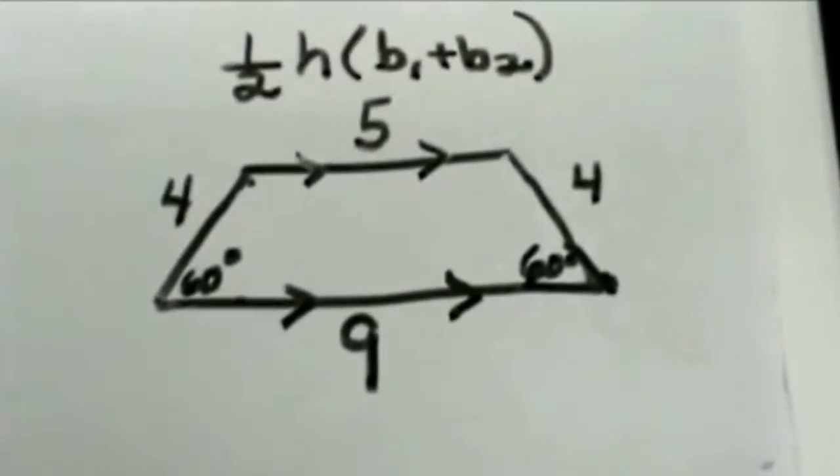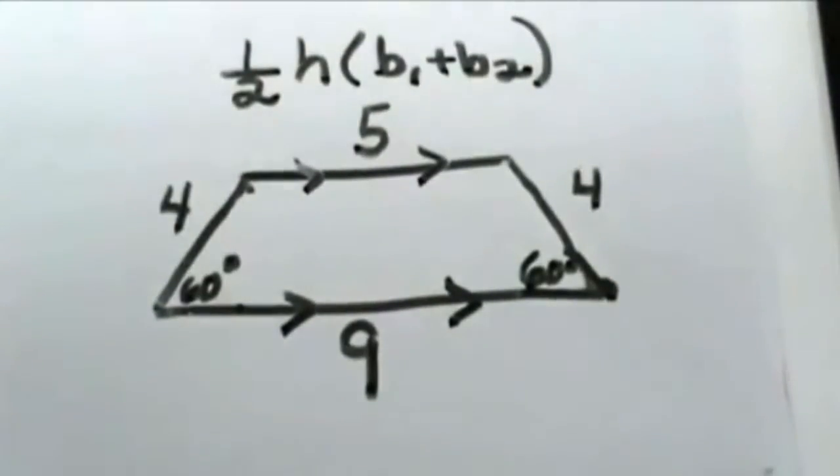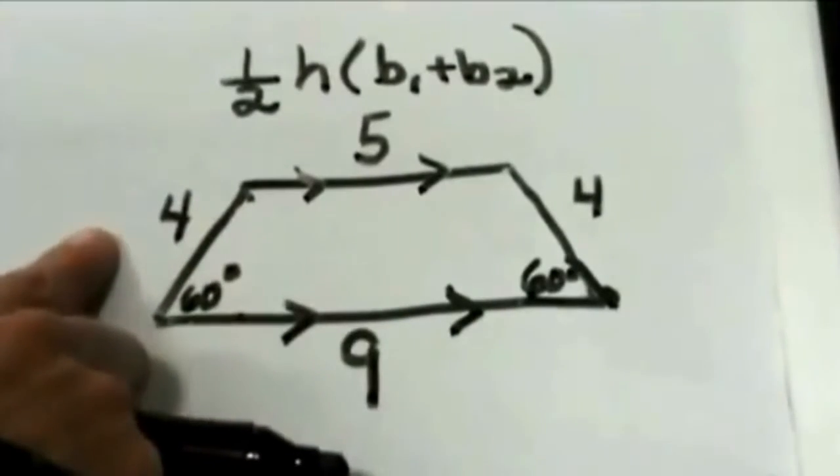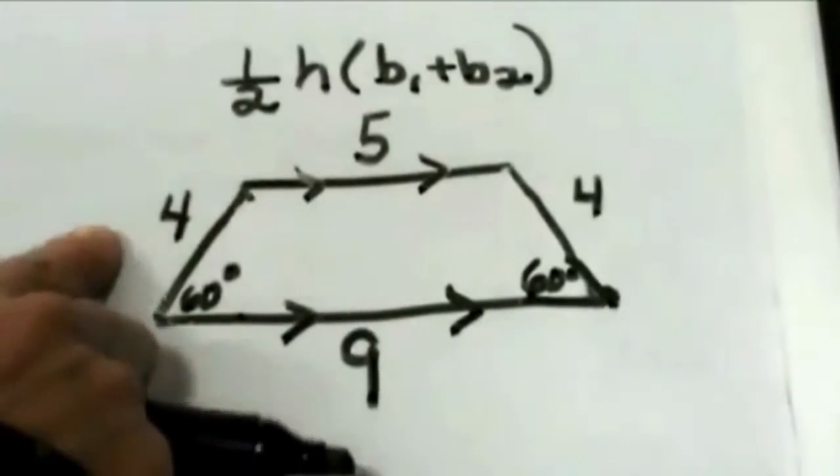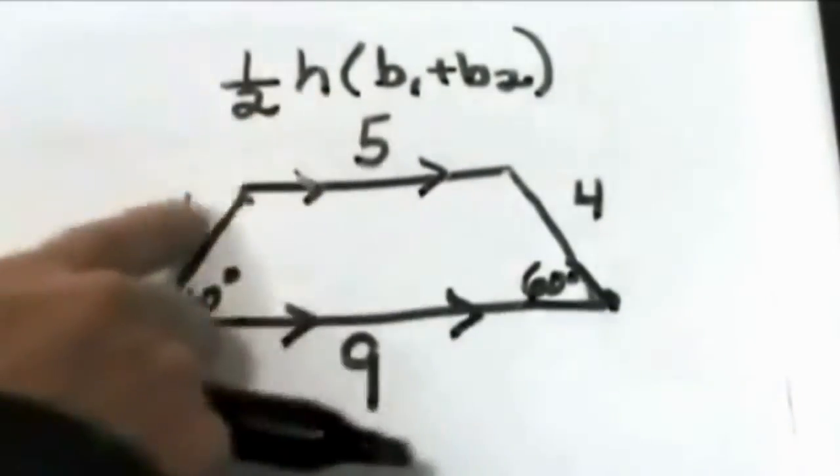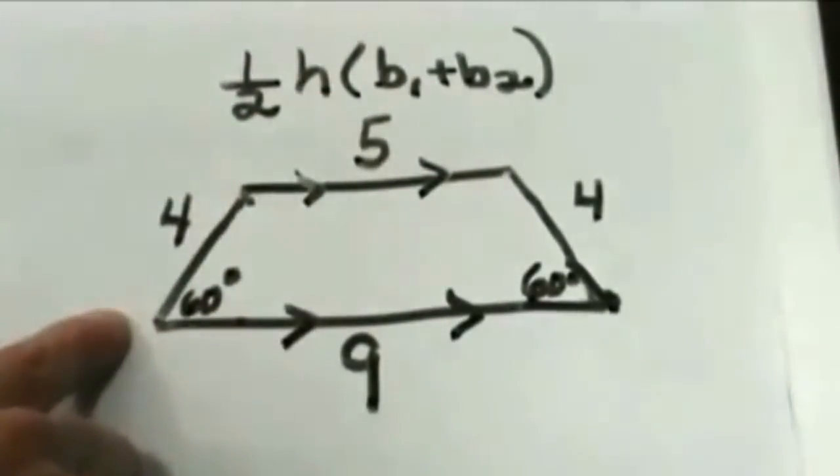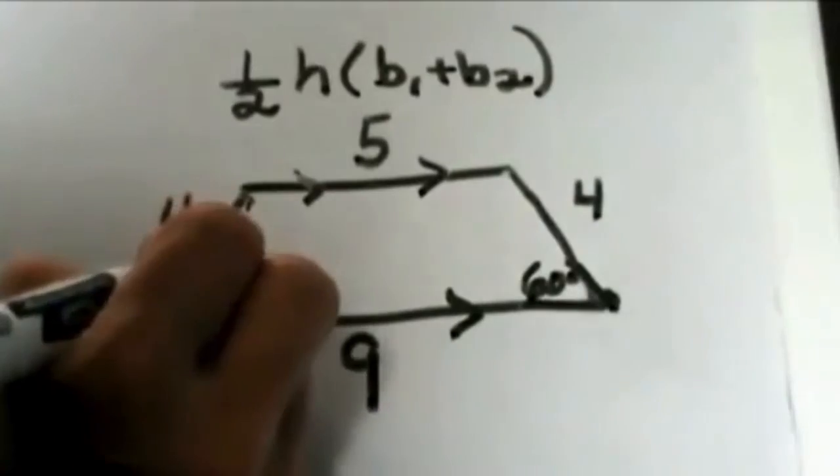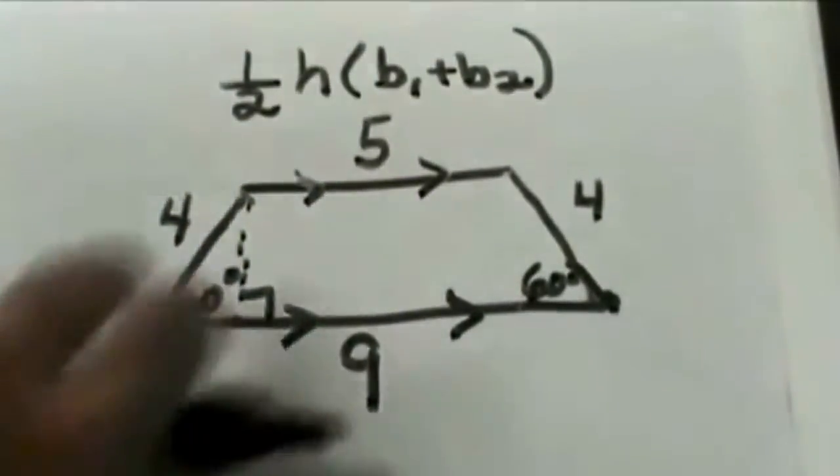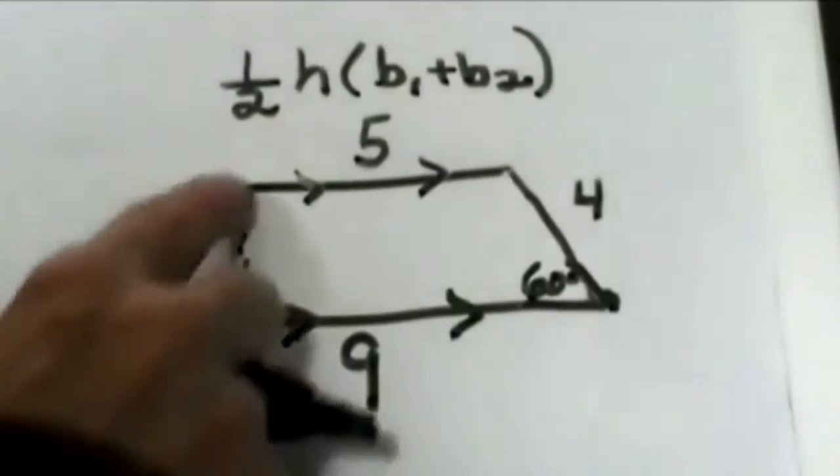Let's try another one. But this time I'm going to give you some different information. I'm going to give you the length of the two bases and the length of the leg. Now you might think you can just plug in 4 for the height, but you can't because this is not the altitude drawn straight down. We need to figure that out. So let me show you how you'd figure that out. You've got a 60 degree angle here.